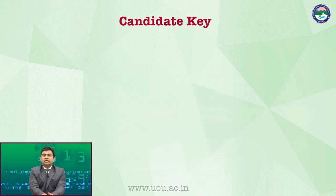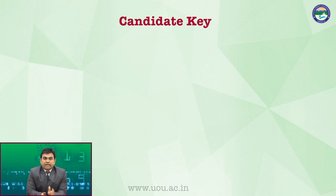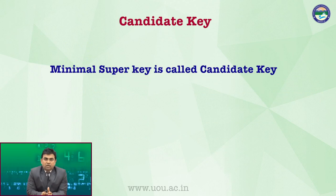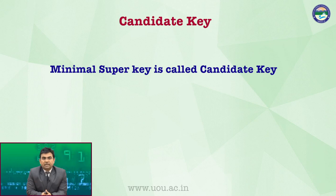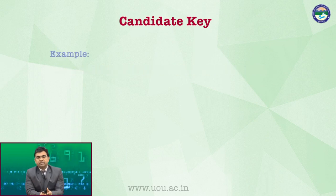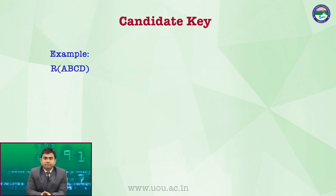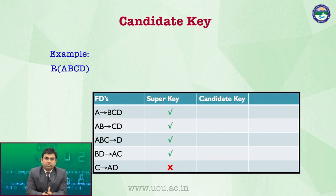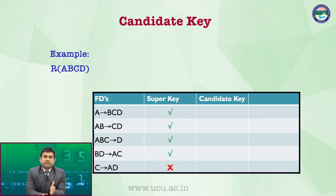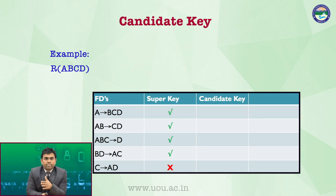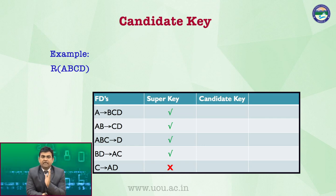Next हमारे पास है candidate key। Candidate key क्या है? Minimal super key। Minimal super key is called candidate key। Let's extend the previous example — the same relation A, B, C, D with the same functional dependencies: A identifies B, C, D; A, B identifies C, D; A, B, C identifies D; B, D identifies A, C; and C identifies A, D।